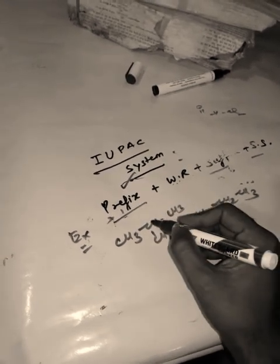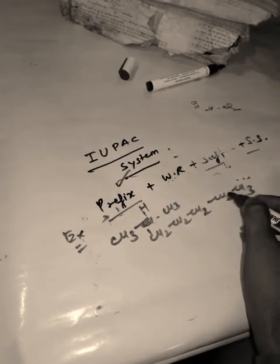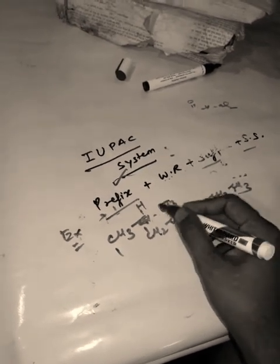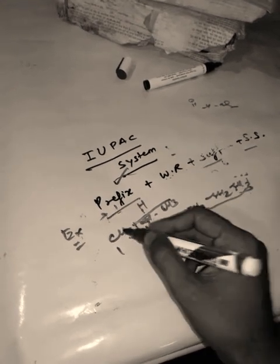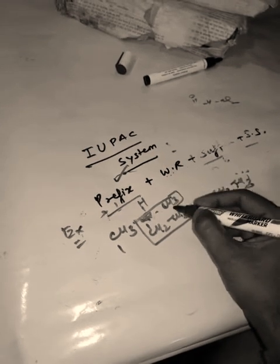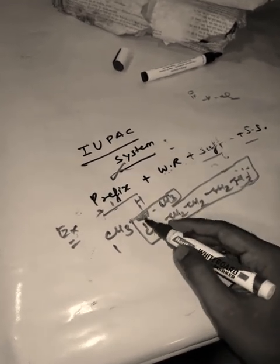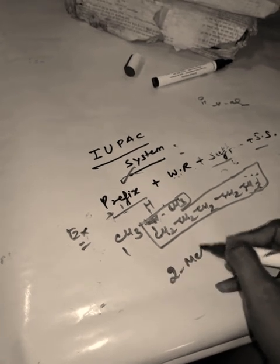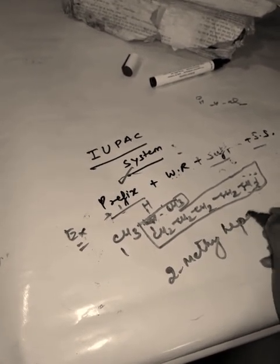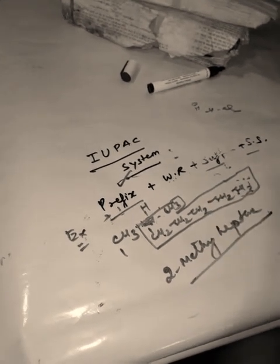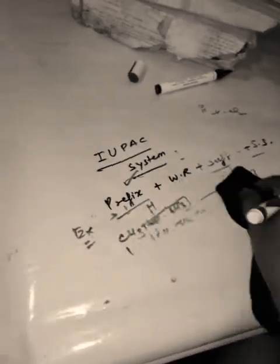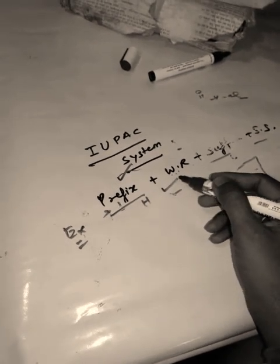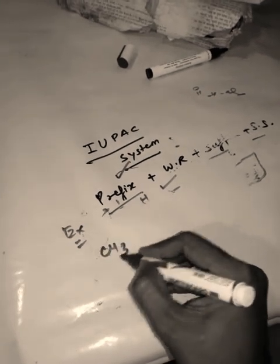Another example: numbering can start from either side since the chain length is the same. Counting gives seven carbons. A methyl group appears at position two, giving the name 2-methylheptane. This is the IUPAC name of this compound. If you know this formula you can write the IUPAC name for any organic compound.